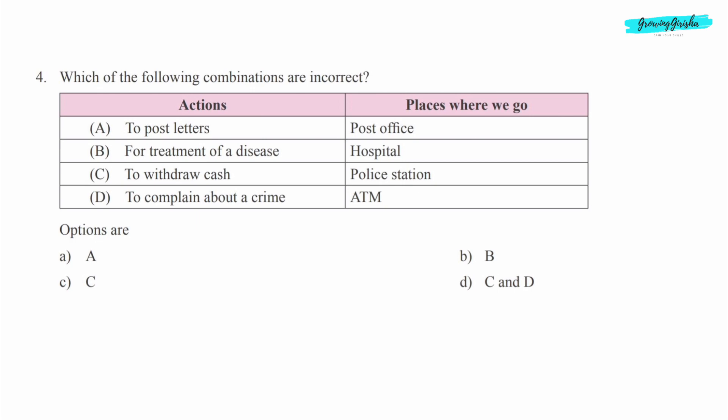Option D: both c and d, because to withdraw cash we go to ATM, and to complain about a crime we go to police station.